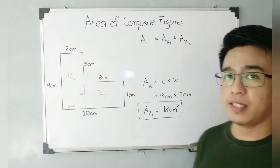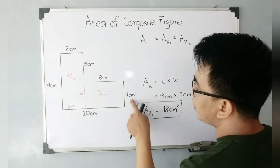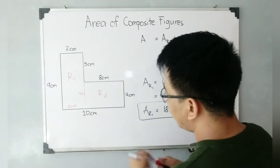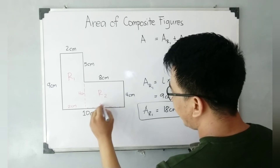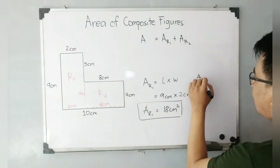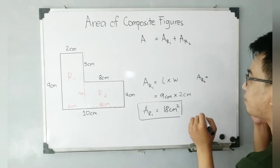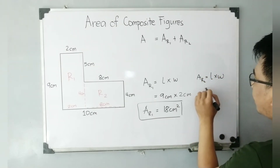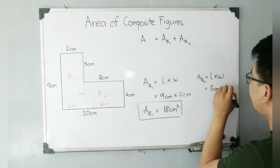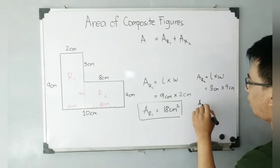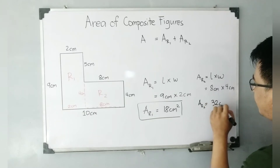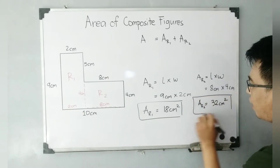So how about Rectangle Number Two? This one is four and this one is also four. If this side is eight, therefore this side is eight centimeters. We identify the length as eight centimeters and the width as four centimeters. For the area of Rectangle Number Two: length times width equals eight centimeters times four centimeters, which gives us 32 centimeters squared.